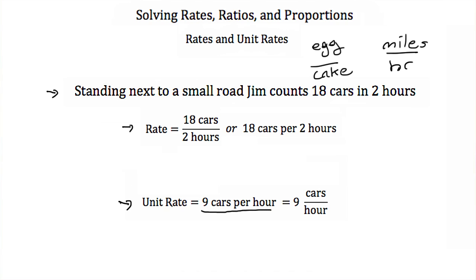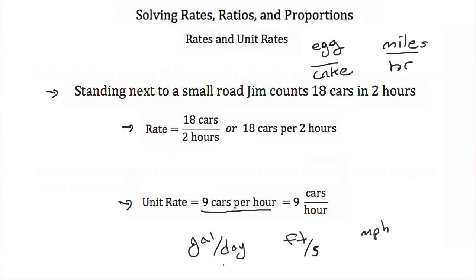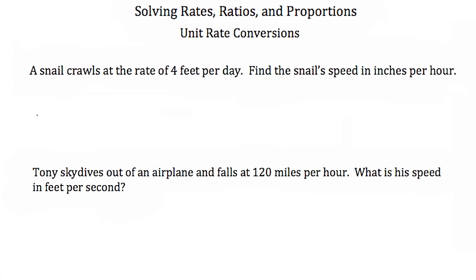Other examples of unit rates are miles per hour, feet per second, gallons per day — pretty much anything with two different quantities in the numerator and denominator where the denominator is always represented with a 1: feet per one second, miles per one hour, or gallons per one day. Now let's take a look at a problem where we have to convert from one unit rate to another. In this problem, a snail crawls at a rate of 4 feet per day. Find the snail's speed in inches per hour.